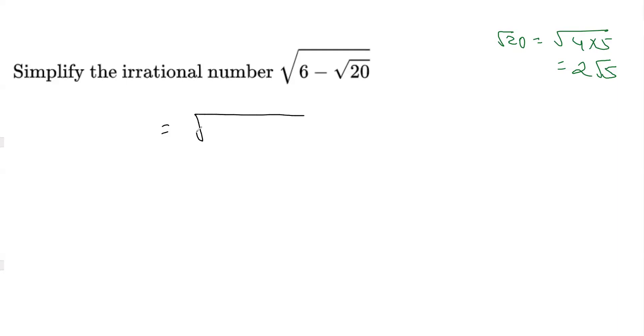Now I'm writing this as 6 minus 2 times root 5. In order to remove this under root, we have to convert this either in the form of a plus b whole square or a minus b whole square. Clearly, it can be done in the form of a plus b whole square.